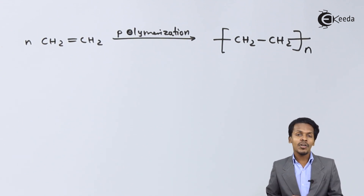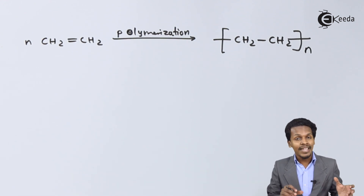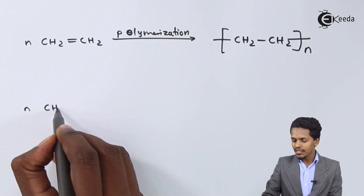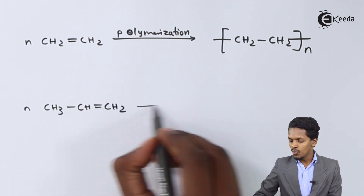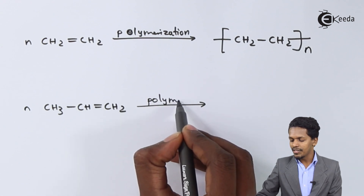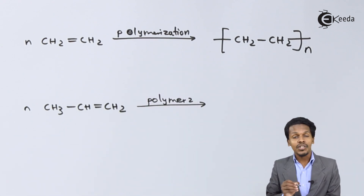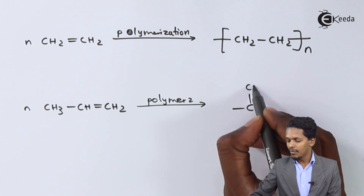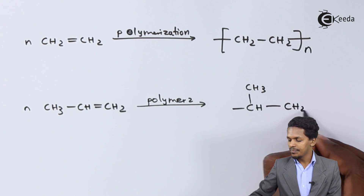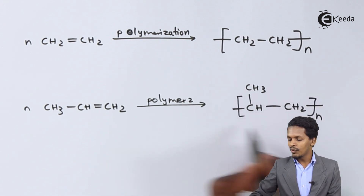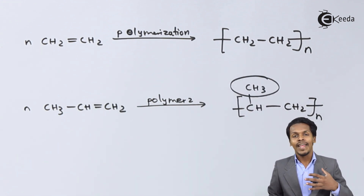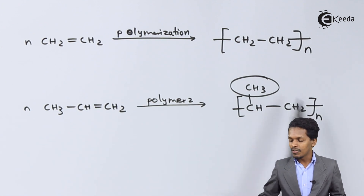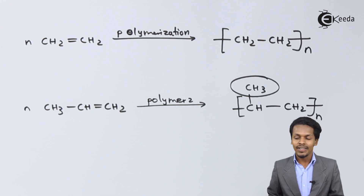Branch polymers consist of a branch or extended group formed along a long chain. For example, consider propene: CH₃CH=CH₂. If this molecule undergoes polymerization, the repeating unit we get contains a CH₃ group as an extended or branched chain along the straight chain. That is why this polymer is known as a branch polymer.